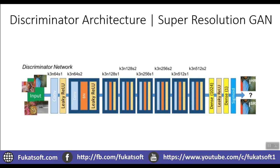This is the discriminator network. The discriminator network is relatively simple — we have convolutional layers, batch normalization layers, and we define the kernel size, number of channels, and strides for each convolutional block. Finally, the output is a probability score between 0 and 1. If it is near 0, we say the image is fake; if it is near 1, we say it is real. We pass both the images generated by our network and the actual high resolution images, and the discriminator's job is to determine whether the images are fake or not.